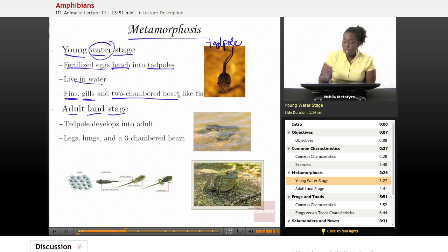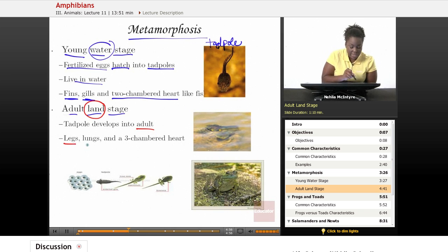The adult stage looks very different. For the adult amphibian, it lives primarily on land. The tadpole that once lived in the water starts to develop structures that look more like an adult amphibian. For example, those structures would be forelegs, hind legs, lungs, and a three-chambered heart. So those fins, gills, and two-chambered heart develop even further into more complex structures.